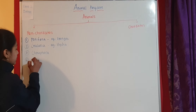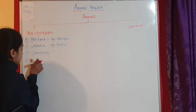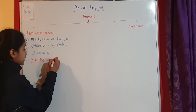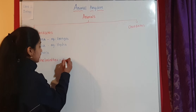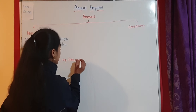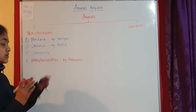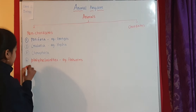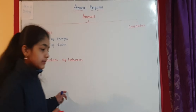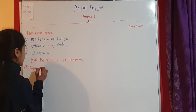The fourth phylum is called Platyhelminthes. This particular phylum includes animals like flatworms. As the name suggests, 'platy' means flat and 'helminth' means worm, so Platyhelminthes includes flatworms like tapeworms.